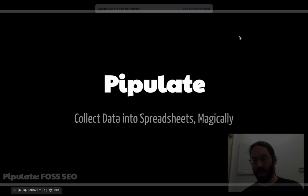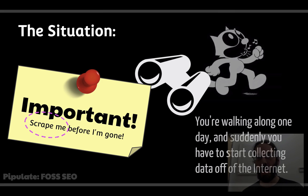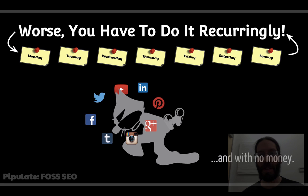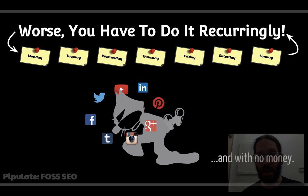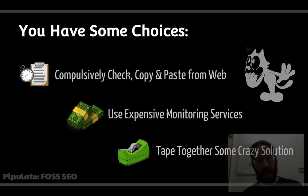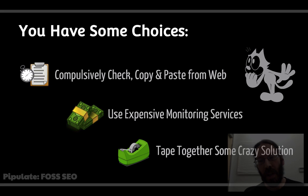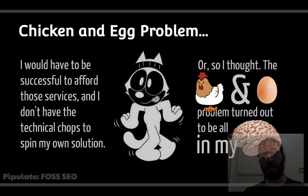Pipulate: collect data into spreadsheets magically. The situation is you're walking along and suddenly you decide you need to start capturing data off the internet — maybe scraping some small piece of information that appears somewhere before it changes the next day. You have to do this every day to capture enough to do trending, and you don't want to spend a lot of money. You could compulsively check the web and copy-paste into a spreadsheet, use expensive monitoring services, or tape together some crazy solution.